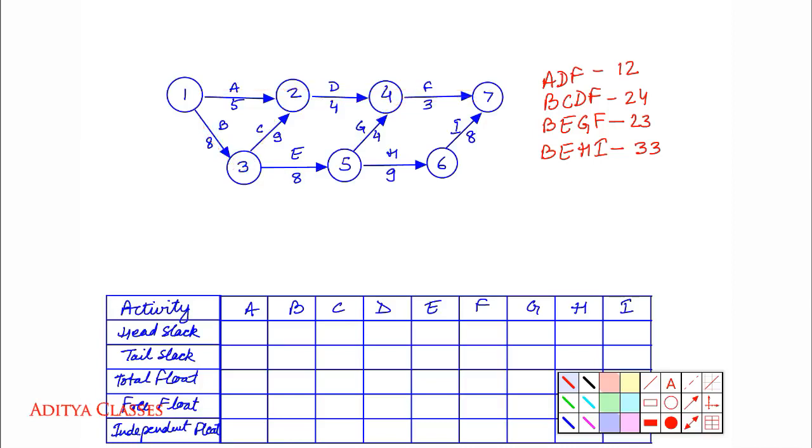So we have path ADF with duration 12, BCDF with duration 24, BEGF with duration 23, and BEHI with duration 33. Done with all the paths. Now, which one is the critical one? This path is the critical one, it is the longest path. So what we do? We should represent BEHI, the critical path, with a double line.